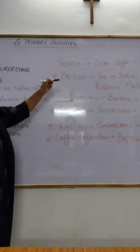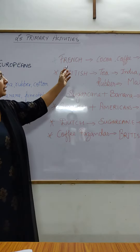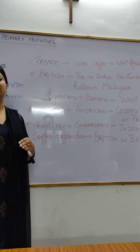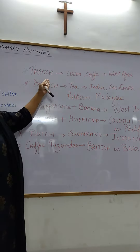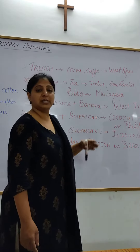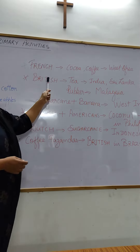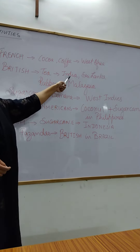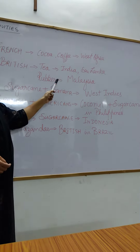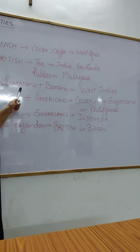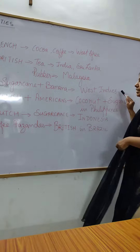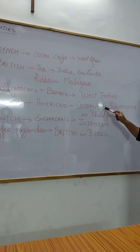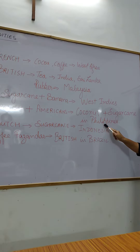The Europeans introduced plantation agriculture in the tropics. The French introduced cocoa and coffee in West Africa. The British introduced tea in India and Sri Lanka, rubber in Malaysia, and sugar cane and banana in West Indies. The Spanish and Americans introduced coconut and sugar cane in the Philippines.